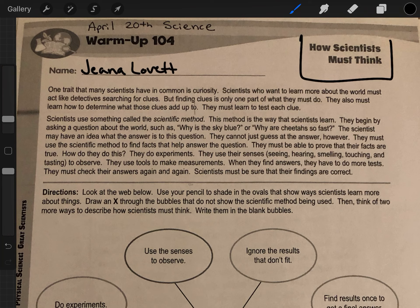They must learn to test each clue. Scientists use something called the scientific method. This method is the way that scientists learn. They begin by asking a question about the world, such as why is the sky blue or why are cheetahs so fast? The scientists may have an idea what the answer is to this question.